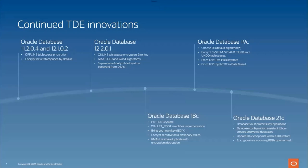Oracle Database 12.2 introduced online tablespace encryption and online rekey, as well as separation of duties to hide the keystore password from DBAs. In Oracle Database 18, we introduced the per-PDB keystore, removed the dependency on environment variables by introducing the initialization parameters wallet_root and TDE_configuration, and added the ability to bring your own key into a wallet. We also introduced options to encrypt databases as they are restored or duplicated into OCI, and conversely to restore or duplicate as decrypted for on-premise databases without a TDE license.